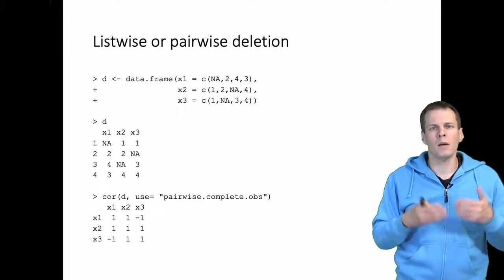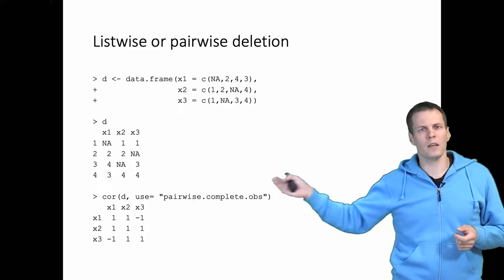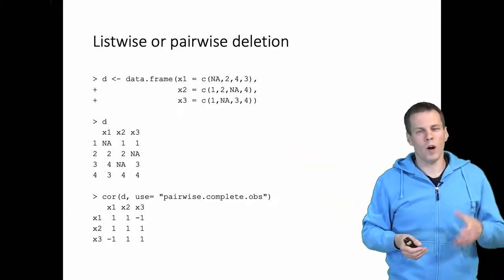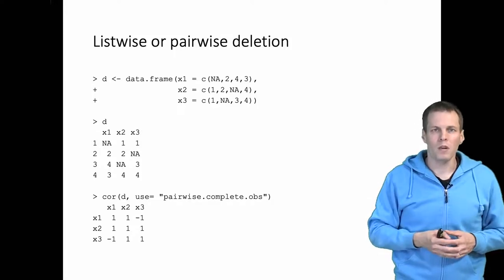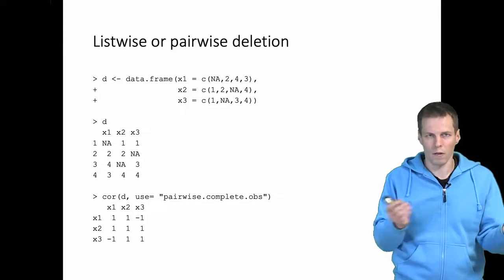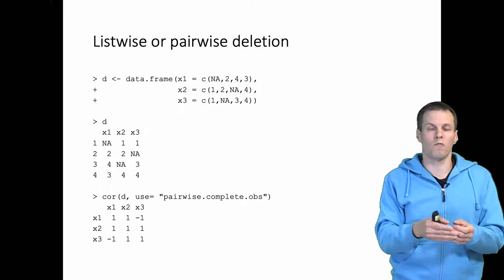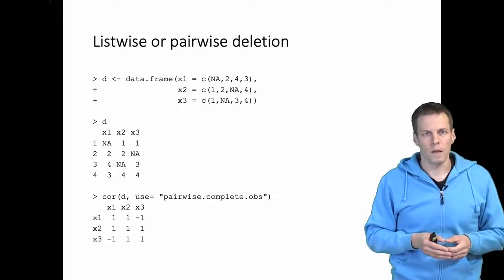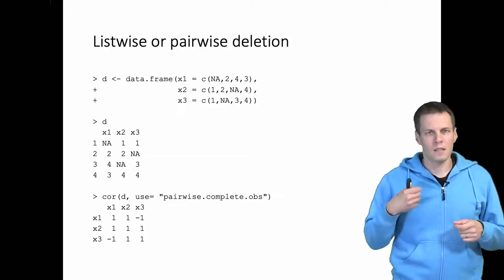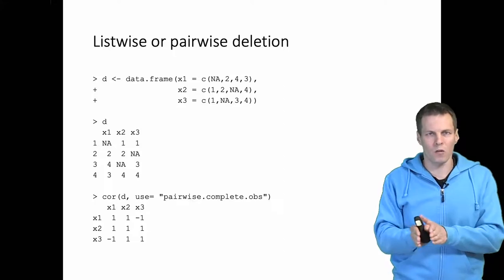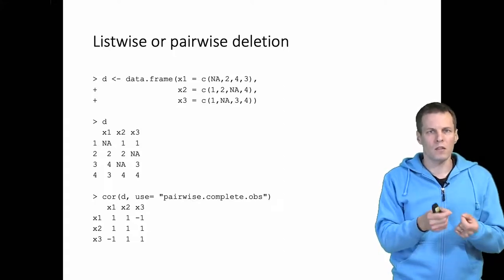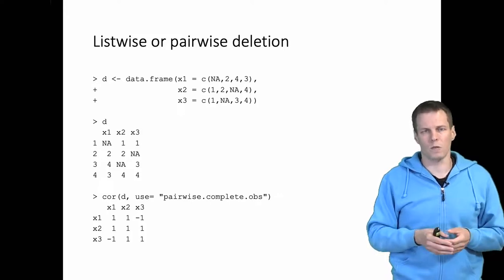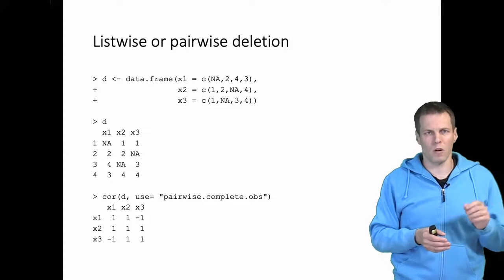Even if we overcome those problems, if we then apply this data in a regression analysis, the regression will do list-wise deletion for us. We would write our regression results and report the correlation matrix in a paper, and then a reviewer would notice that the correlation matrix and the regression analysis don't match, because the correlations were calculated from a different data set than the regression. Pair-wise deletion sounds appealing since you use the maximum data for each correlation, but it is actually problematic for statistical and practical reasons.